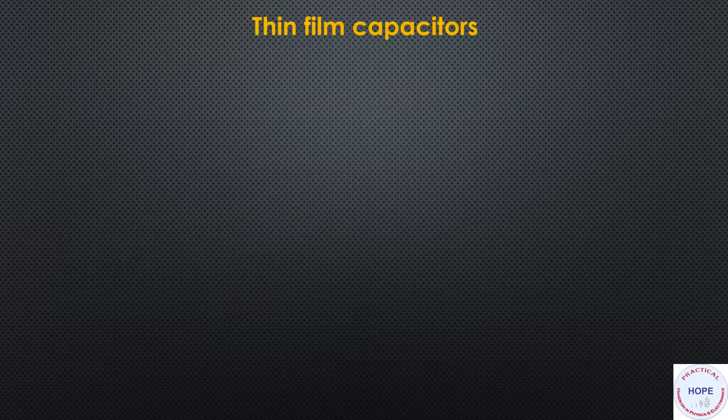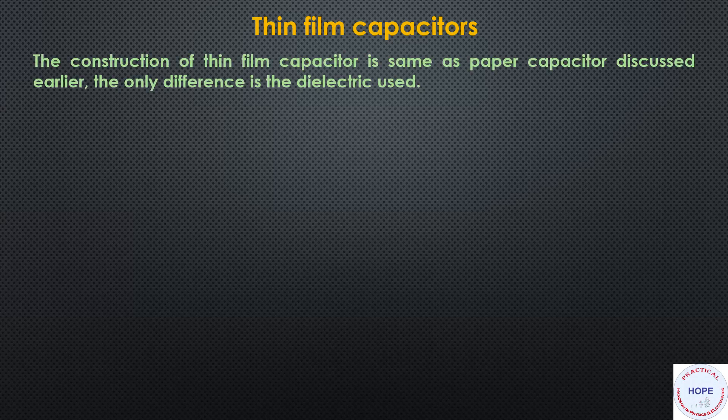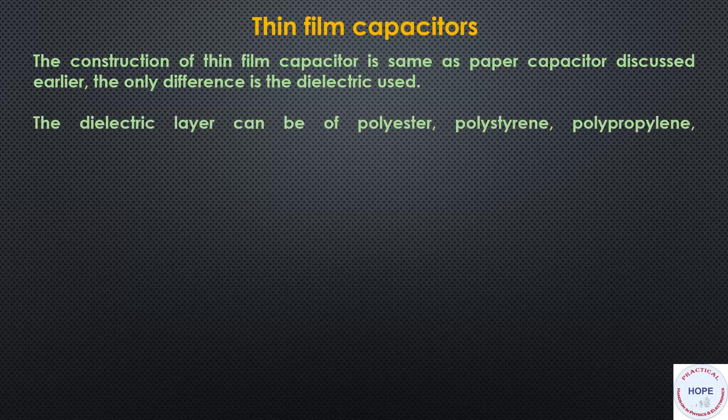Next are thin film capacitors. Their construction is the same as that of paper capacitors, with the only difference being the dielectric used. The dielectric layer can be of polymers like polyester, polystyrene, polypropylene, polycarbonate, or it can be of metal oxides.